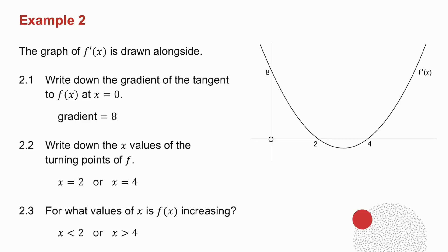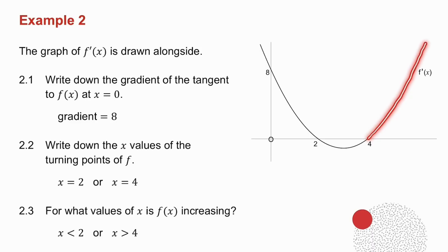Question 2.3 says: for what values of x is f(x) increasing? f(x) increases when the derivative is positive. This is the derivative graph, so where is this graph positive? It's positive above the x-axis. My derivative graph is positive when x is less than 2 or when x is greater than 4. So f(x) is increasing when x is less than 2 or when x is greater than 4.